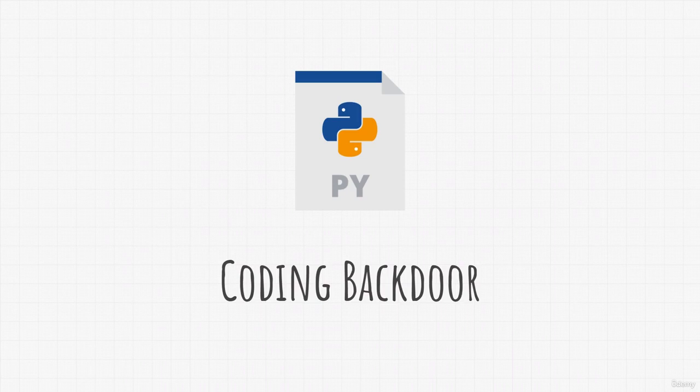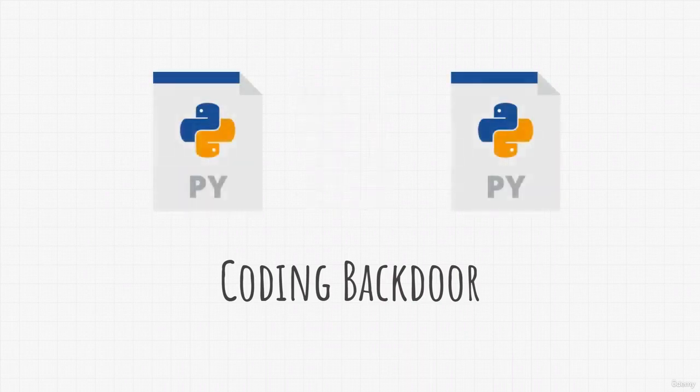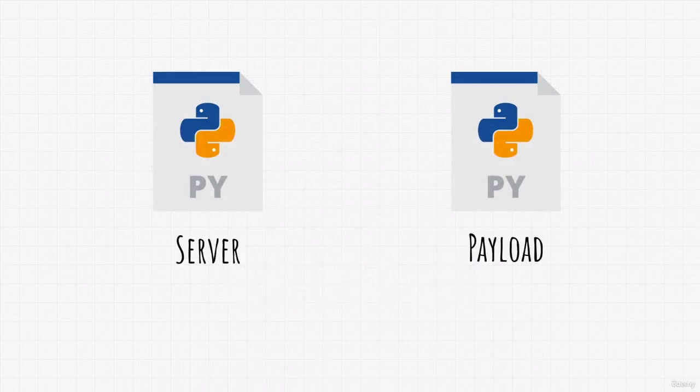However, if we think about it a little bit, you might realize that in order for our project to work and in order for us to successfully communicate with the target machine using our backdoor, we must create two programs: a server and a payload. One will be running on our Kali Linux machine, and the other one will run on our target machine.